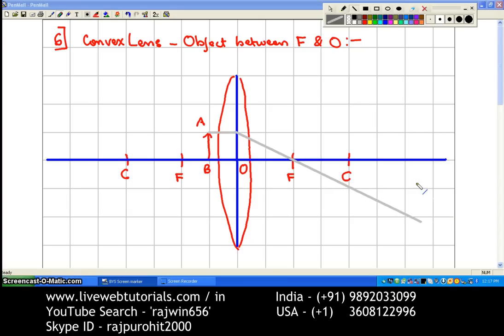So this is passing through the focus. Now the second ray that we are drawing, this ray is passing through the optical center. And this ray is not going to deviate.